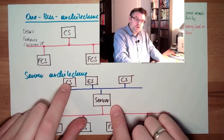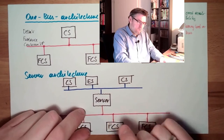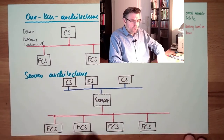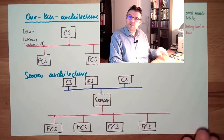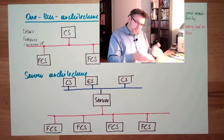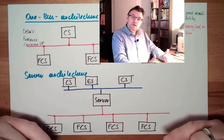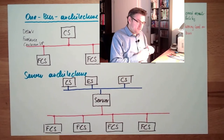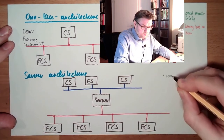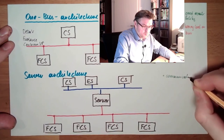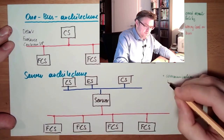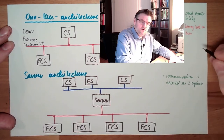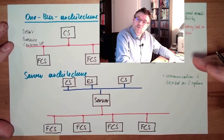There is no issue with data consistency here because the server's data are always consistent. In the other direction, the server is just mirroring the commands from the control stations to the field control stations. That's the big benefit. Also, the communication load is separated on two buses, so the heavy load on the bus is reduced.